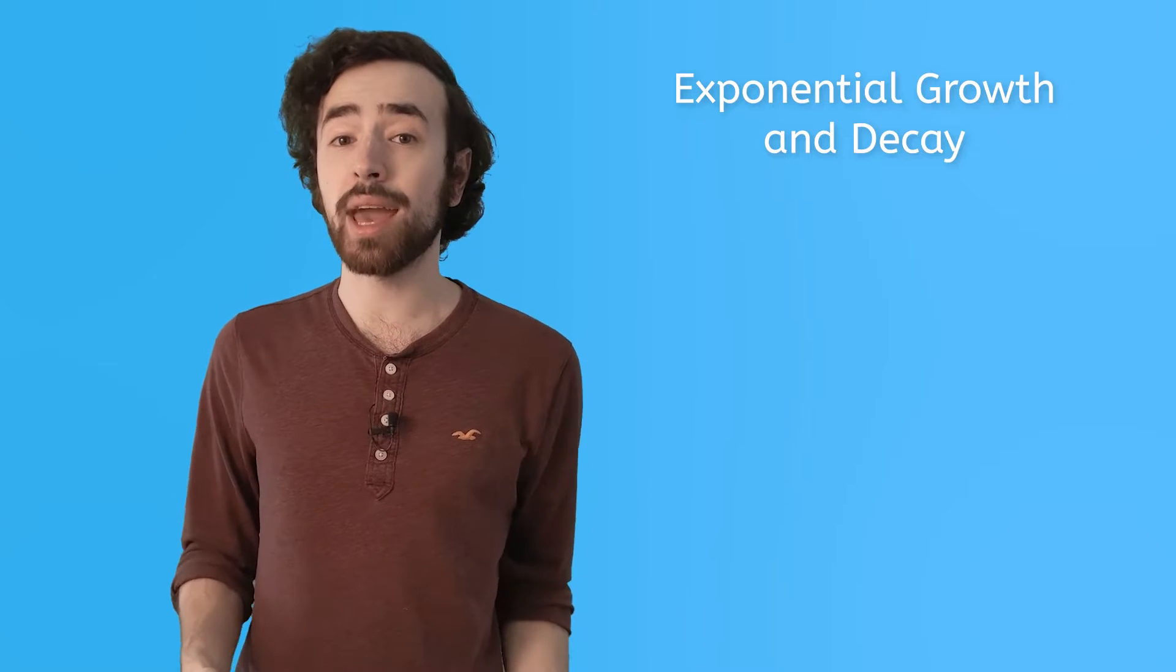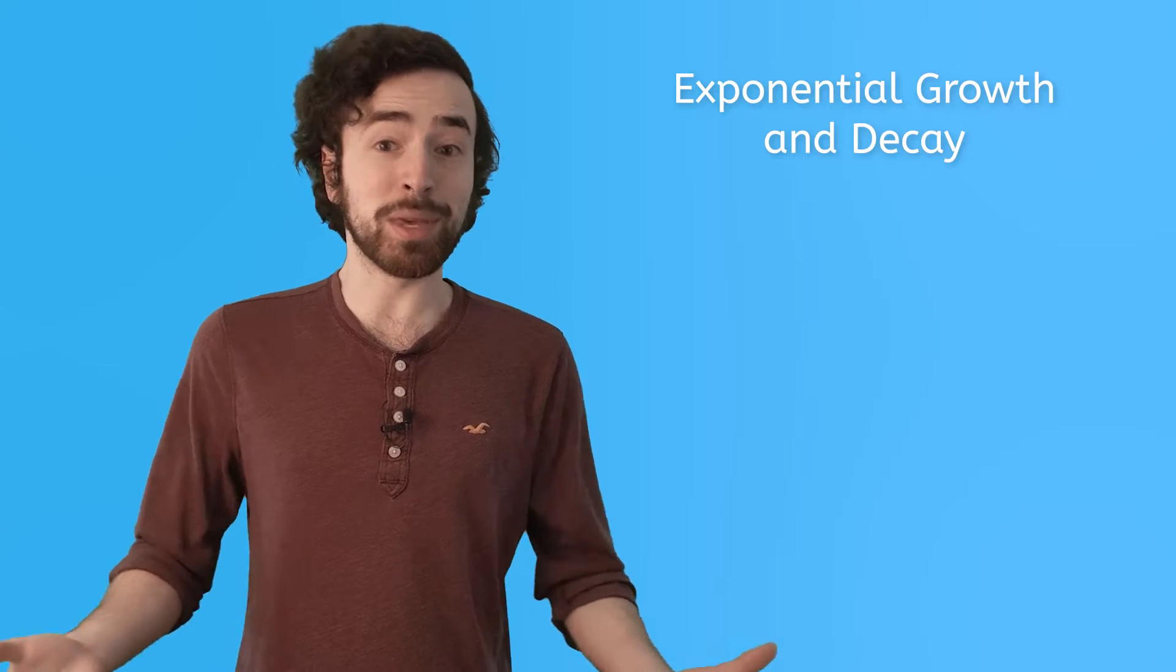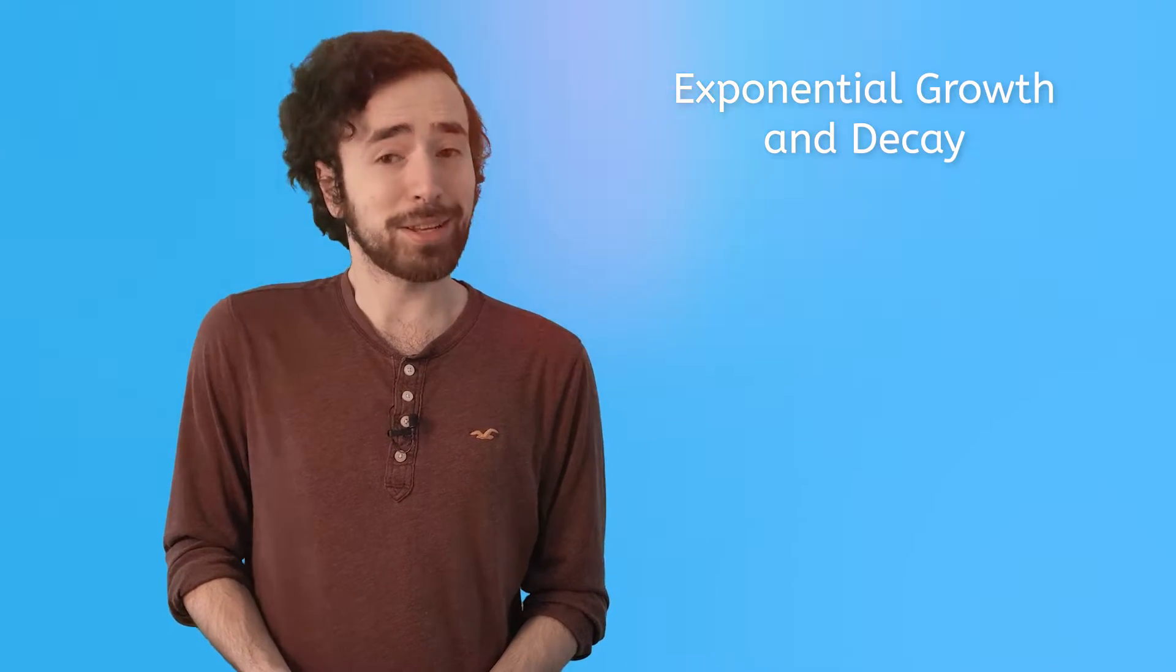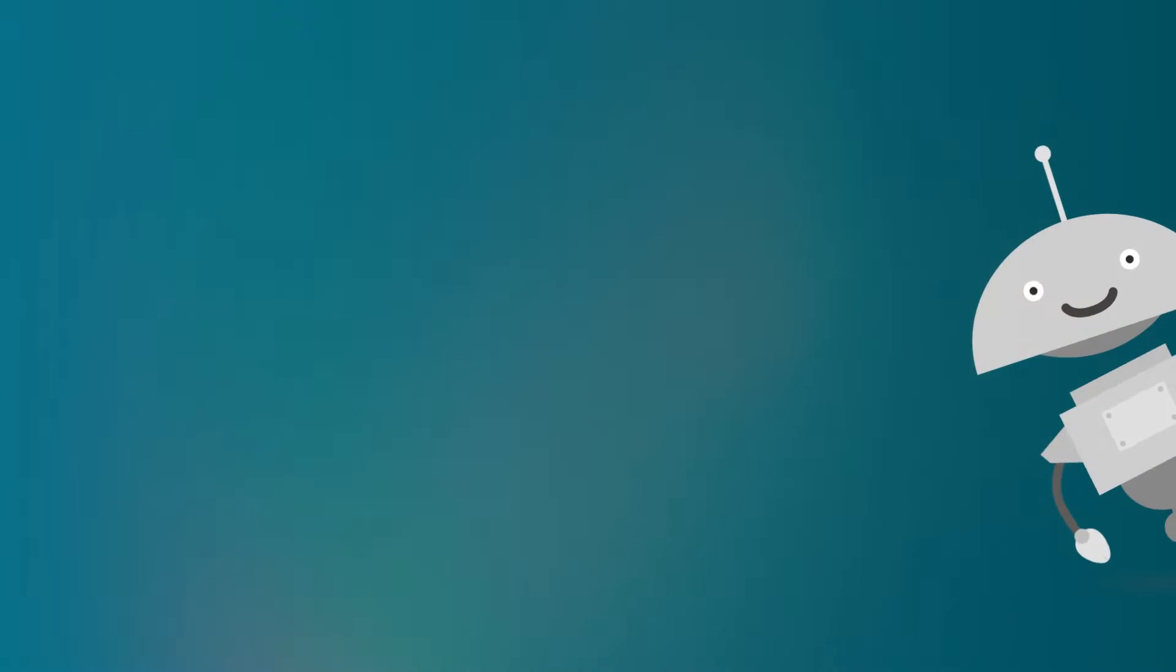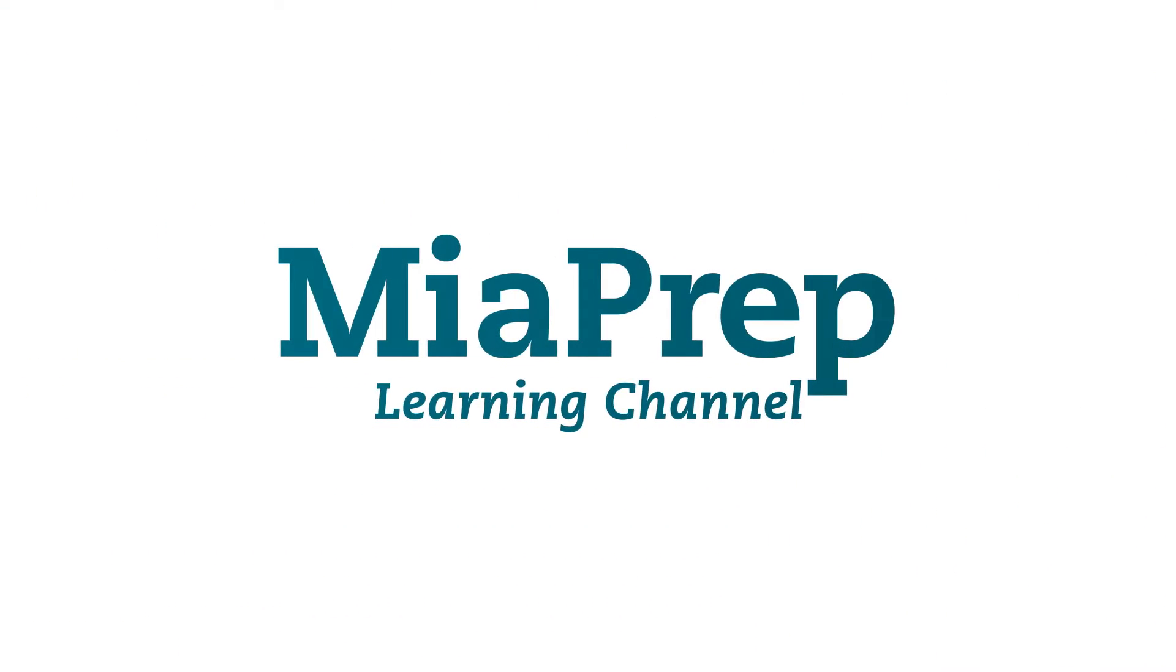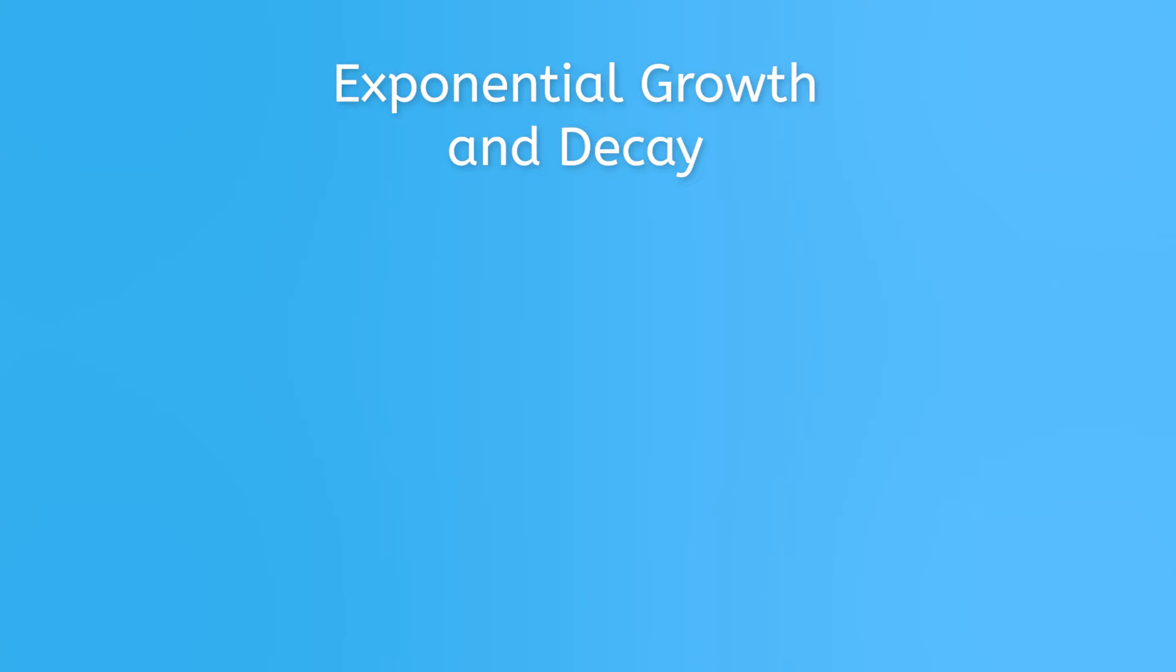In this next unit of algebra, we are going to be looking at exponential growth and decay and how it applies to everyday life. Who knows? Maybe by the end of this, you'll be able to help me figure out my movie contract. Let's get into it. This unit consists of five major topics, and they're all pretty closely connected.